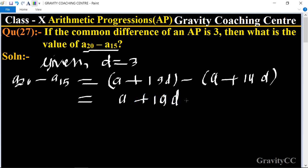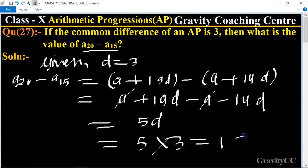a and a cancel, and 19 minus 14 equals 5d. Now we put the value of d. The value of d is 3, so 5d equals 5 times 3 equals 15, which is the required answer.